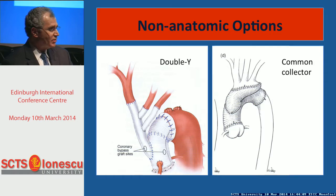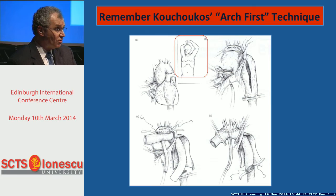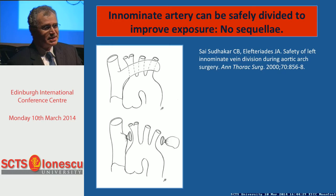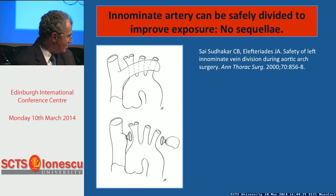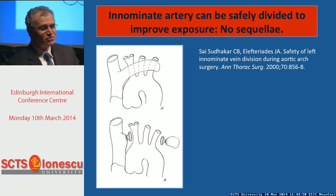There are all these creative non-anatomic options — we must not forget not only Dr. Matalanus' operation, but also Kachouko's arch-first technique. All of these techniques are dependent on good exposure. You can divide the innominate vein with absolute impunity. I've done it thousands of times — the arm doesn't fall off and the brain doesn't swell. That alone tremendously improves your exposure. You can crank your retractor as far as you want with nothing in your way.